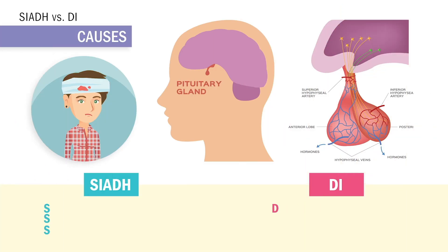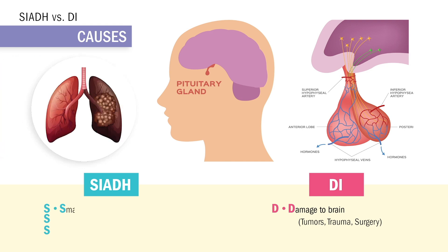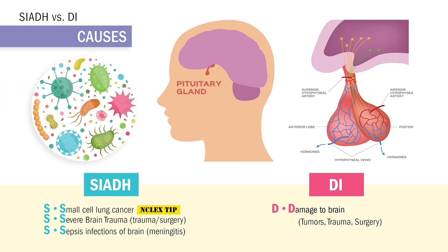The causes of SIADH and DI are very similar — both revolve around damage to the brain, anything that puts pressure on the pituitary since ADH is made in the pituitary. For DI, remember D for damage to the brain like tumors, trauma, and even brain surgery, which can cause increased ICP or increased intracranial pressure, squeezing the pituitary. The big difference from SIADH: NCLEX keywords are small cell lung cancer, carcinomas, and ectopic tumors in the lung that secrete ADH. Two other S's for SIADH come from brain damage — severe brain trauma and sepsis or infections of the brain like meningitis and viral pneumonia.